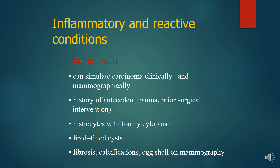Fat necrosis can simulate carcinoma both clinically and mammographically. There is typically a history of antecedent trauma prior to surgical intervention. Histiocytes and foamy cells — lipid-laden cells — are seen, and there can be fibrosis, calcification, and eggshell calcification seen on mammography.